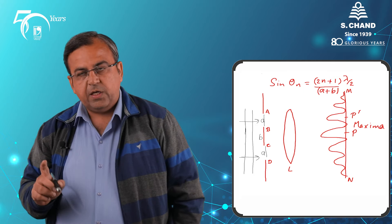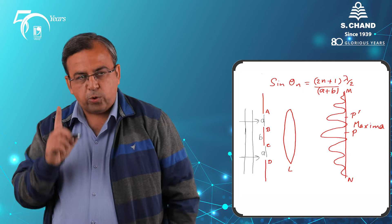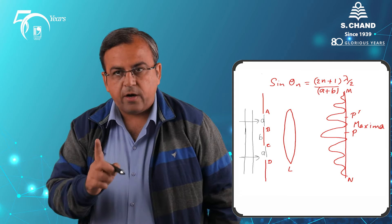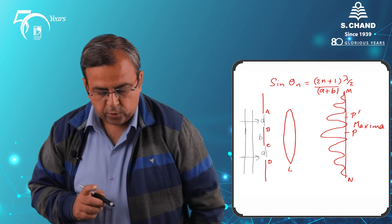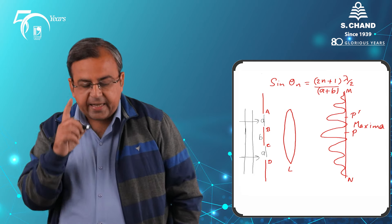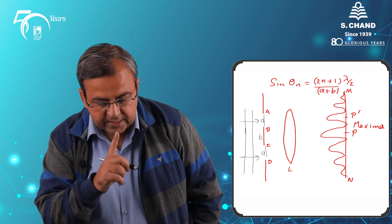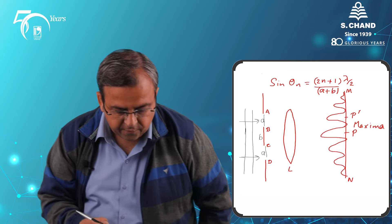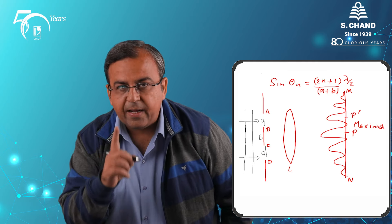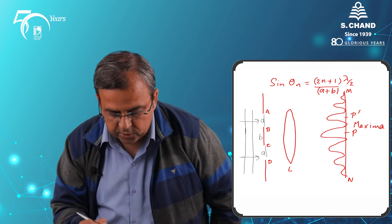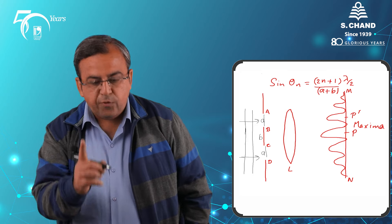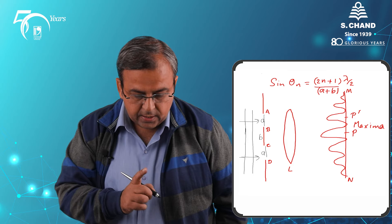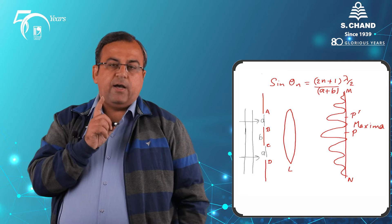On the other hand, if secondary waves travel in the direction theta dash such that the path difference is an even multiple of λ/2, then theta dash will give you the direction of maxima due to the interference of the light waves emanating from these two slits.